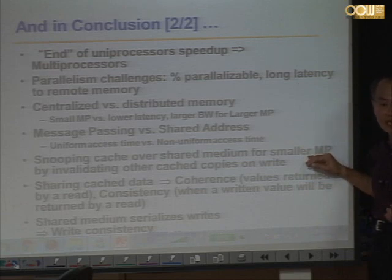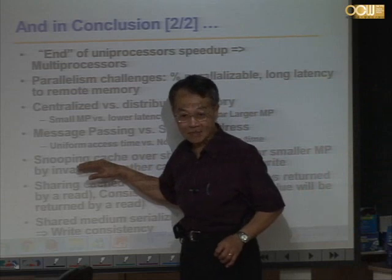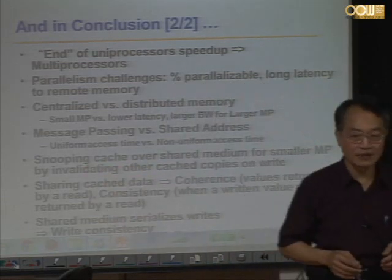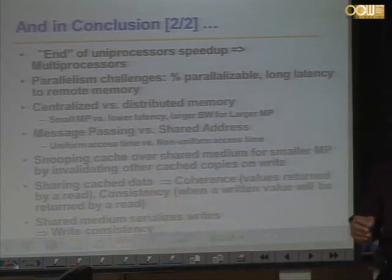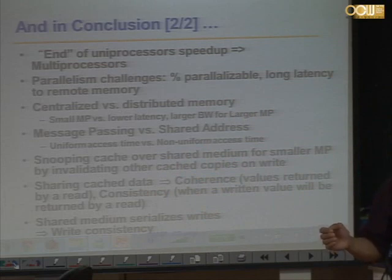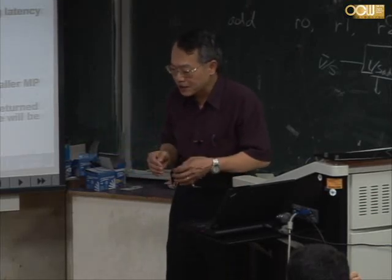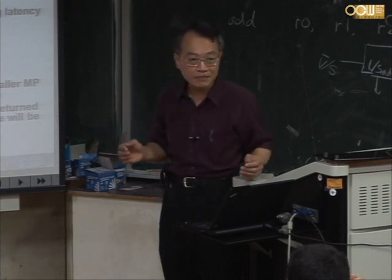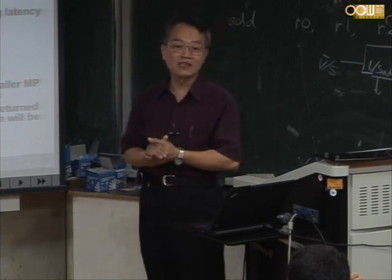Scalability means: what happens when we have more and more processors? The problem with snooping is that if we have hundreds or thousands of processors, snooping will have to interrupt all processors whenever there is a cache coherence activity. Everybody will have to be interrupted — hundreds and thousands of them — making performance extremely low, especially for the broadcast medium.